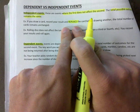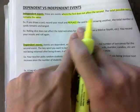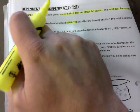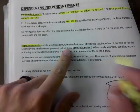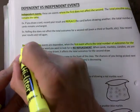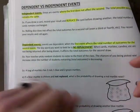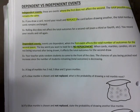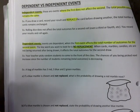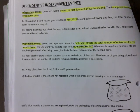The key word for independent events is replacement. If you see a question where you draw a card and then replace that card, you're dealing with independent events. For dependent events, the first event affects the total number of outcomes for the second event — the key word here is no replacement. When cards, marbles, or candies are not returned after being drawn, it affects the total number of outcomes you can choose from on the next draw.